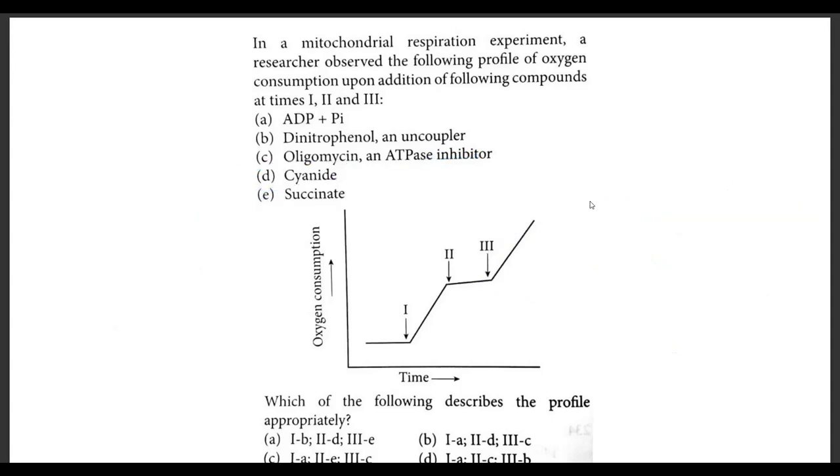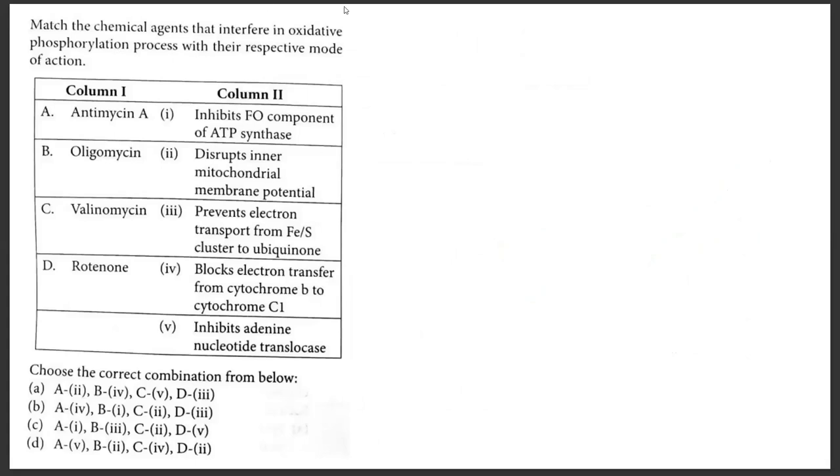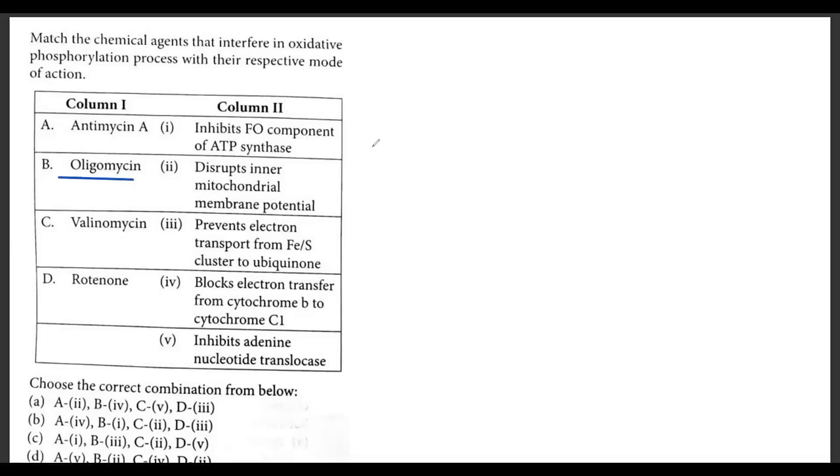Moving on to our next question. Match the chemical agents with the mode of action. Pretty simple question. The simplest one I would like to go for is oligomycin. Now oligomycin starts with O and our ATP synthase has two components, F0 and F1. This F0 gets its name from oligomycin. The O stands for oligomycin. What does oligomycin do? It binds to the F0 part of ATP synthase and doesn't allow the protons to enter. So B is 1.